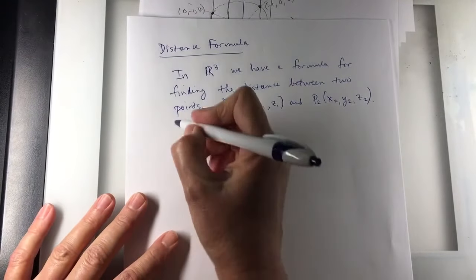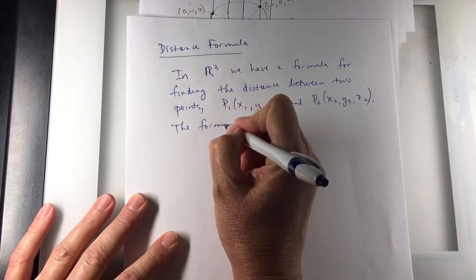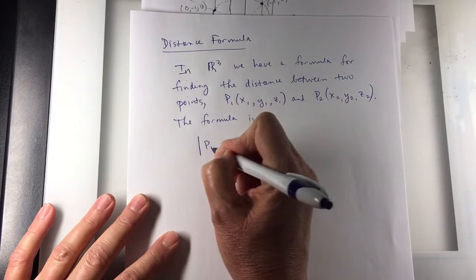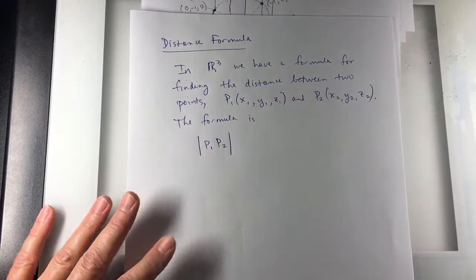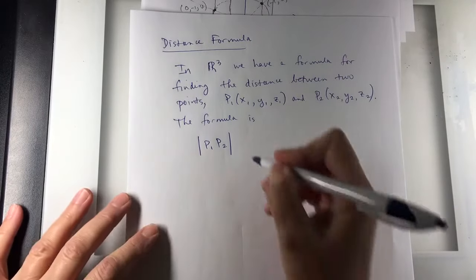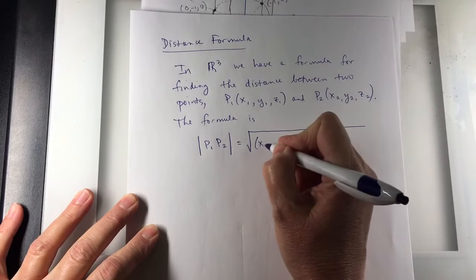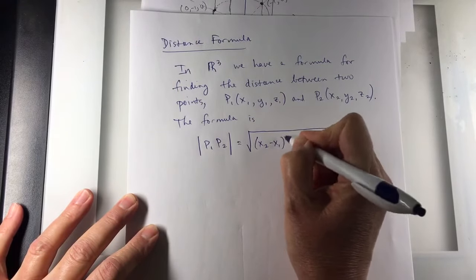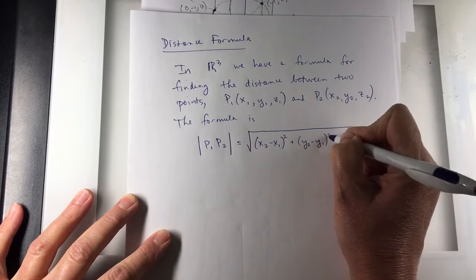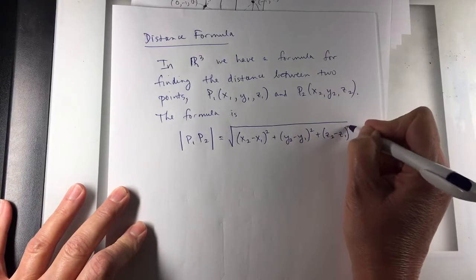Between two points, the formula is, they'll write it like this, absolute value for distance. The absolute value of P1, P2 is equal to the square root of x sub 2 minus x sub 1 squared, plus y sub 2 minus y sub 1 squared, plus z sub 2 minus z sub 1 squared.